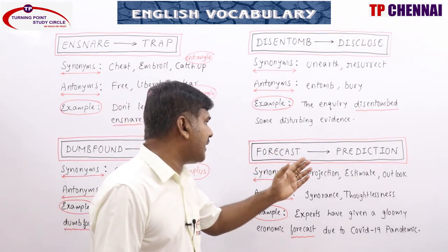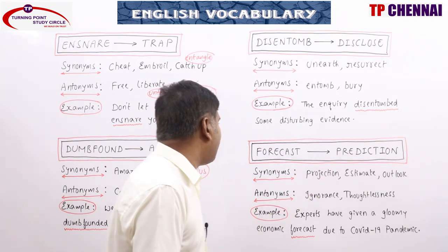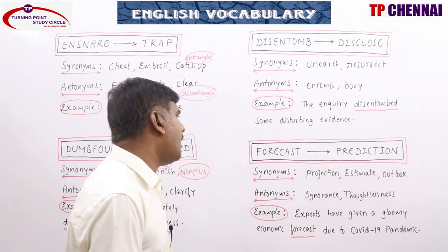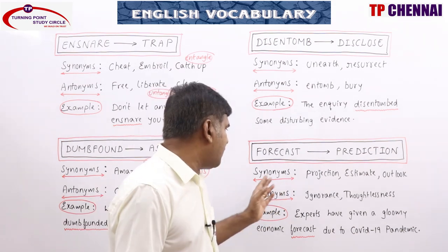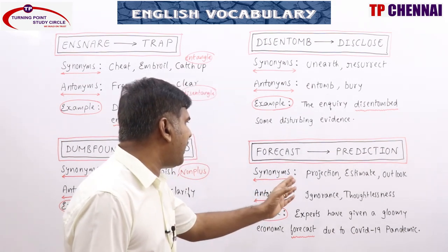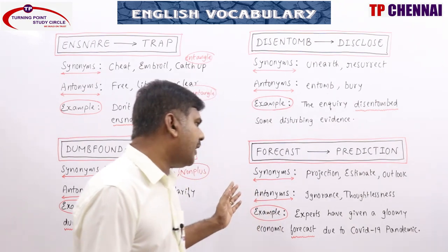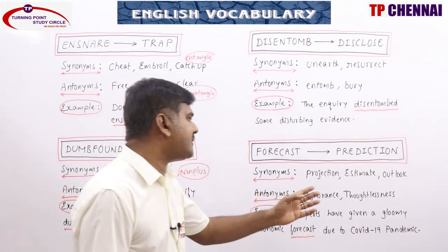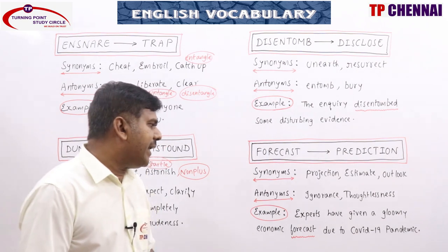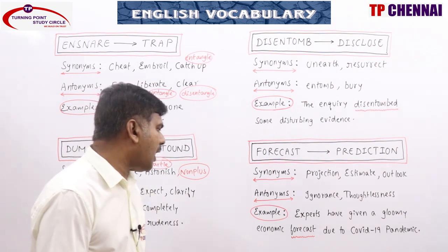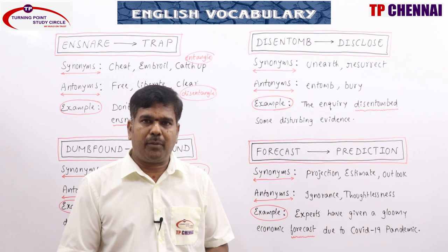Forecast is a statement of what is judged likely to happen in the future — in a situation or weather condition. Synonyms: projection, estimate, outlook, foreknowledge. Antonyms: ignorance, thoughtlessness, insight. Example: Experts have given a gloomy economic forecast due to the COVID-19 pandemic.